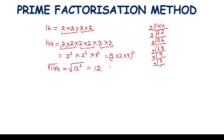In the prime factorization method, first we find all prime factors, then make pairs, and from each pair we take only one factor. From two's pair we take one two, from three's pair we take one three.